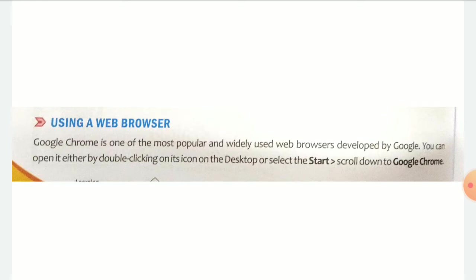Up till now we had understood what a web browser was. A web browser is a software with the help of which we are able to open and use the internet. This is a particular software. Once this software is on, you can go to any website or web page and use the internet.